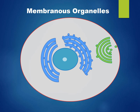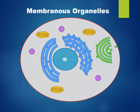Mitochondria produce energy for the cell in the form of ATP, which is adenosine triphosphate. Lysosomes have digestive enzymes that break down damaged cellular parts and pathogens. Peroxisomes have oxidative enzymes that break down organic materials and toxic compounds.